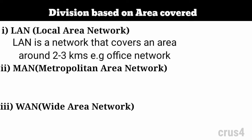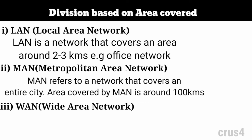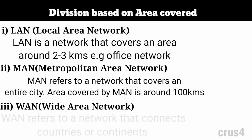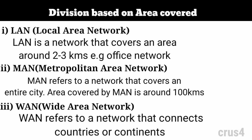For example, a college network or an office network. Metropolitan Area Network (MAN) refers to a network that covers an entire city — the area covered by MAN is around 100 kilometers. Wide Area Network (WAN) refers to a network that connects countries or continents. For example, the internet allows users to access a distributed system called the WWW from anywhere in the globe.